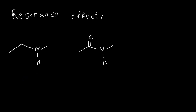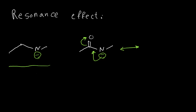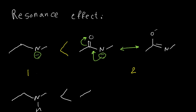Here is another example for resonance. We want to see which compound is more acidic, so we deprotonate both. The anion on the left side has a negative nitrogen with no resonance. The anion on the right side has resonance with the carbonyl group. We have two resonance forms for the right side and only one structure for the left side. Because of that, the right anion is more stable, so the right compound is more acidic.